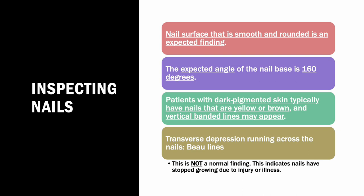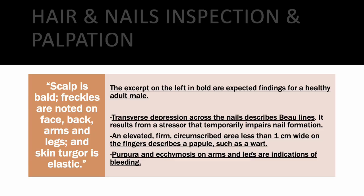Beau's lines are definitely something to annotate and report to the physician, as lab work or imaging may be needed. It's usually due to a crush injury, significant illness, or autoimmune process. The other nail findings we discussed are normal — some are specific to people with darker skin tones. No big deal for those expected variants.